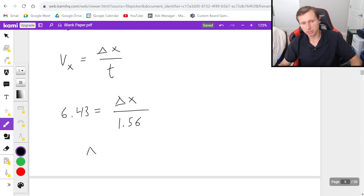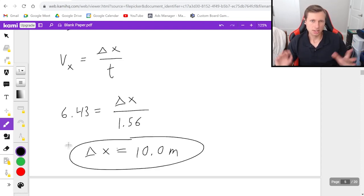And finally, if I want to solve for delta x, it's pretty easy. Just multiply 1.56 on both sides. Yeah, you'll notice this one was a lot easier, so that's nice. And we'll get a final answer of 10.0 meters. So there we go. That's a lot of good practice problems for you.